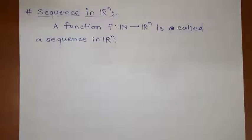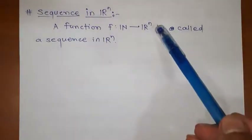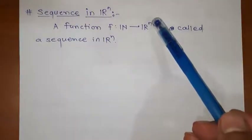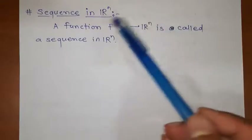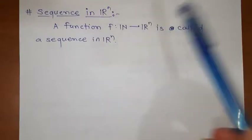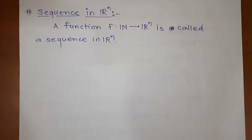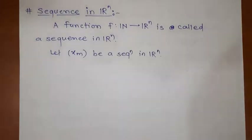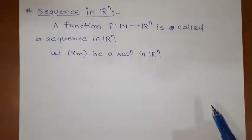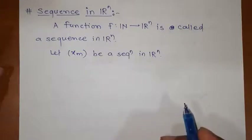So in R, we have a function f from N to R, that means the co-domain is R, but in the case of a sequence in Rn, the co-domain is Rn. So when we discuss examples, we will come to know. If you have any sequence xm in Rn, then it will have n number of components.